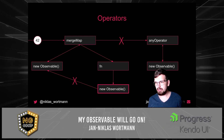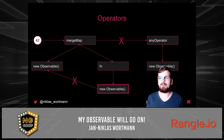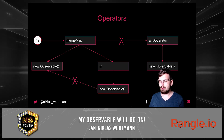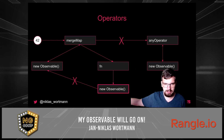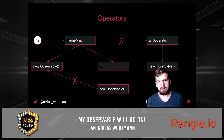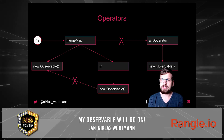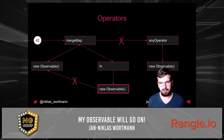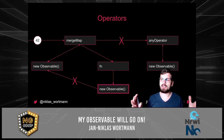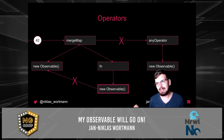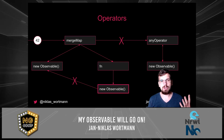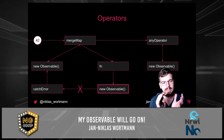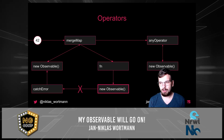Error again behaves differently. An error signal on the inner observable will be propagated — the same way errors in JavaScript are propagated — always bubbling up to the next instance. So if the inner observable throws an error, it will be emitted on the outer observable. And what happens if the outer observable gets an error? The whole observable ends. Therefore, what we should always do when talking about inner observables is place a catchError on the inner observable.